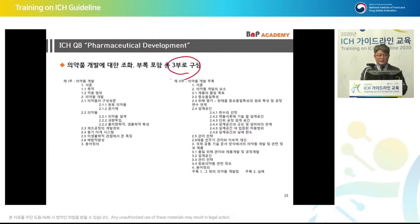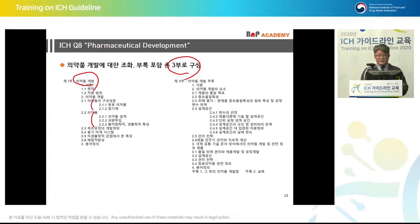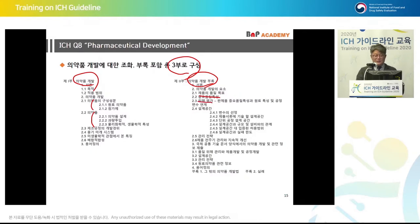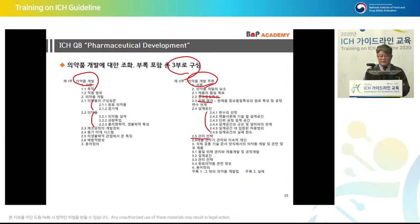There are three sections for pharmaceutical development. First, pharmaceutical development — the components are drug substance, excipients, design, physicochemical characteristics, and the background of process development. The second section talks about quality objectives, critical quality attributes, and risk management. Section 2.4 talks about design space. Section 2.5 talks about control strategy.